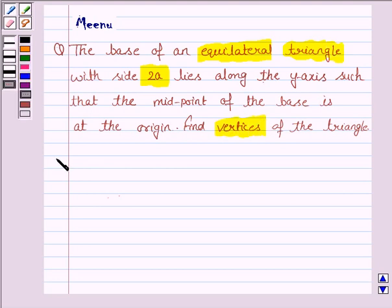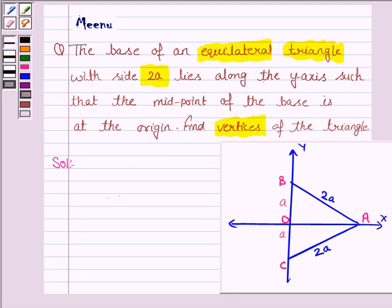Let us now move on to the solution. We are given an equilateral triangle, say ABC, and the base lies along the y-axis. Since it is an equilateral triangle, all the sides are equal. That is, AB equals AC equals BC, and the length is given to be 2a.